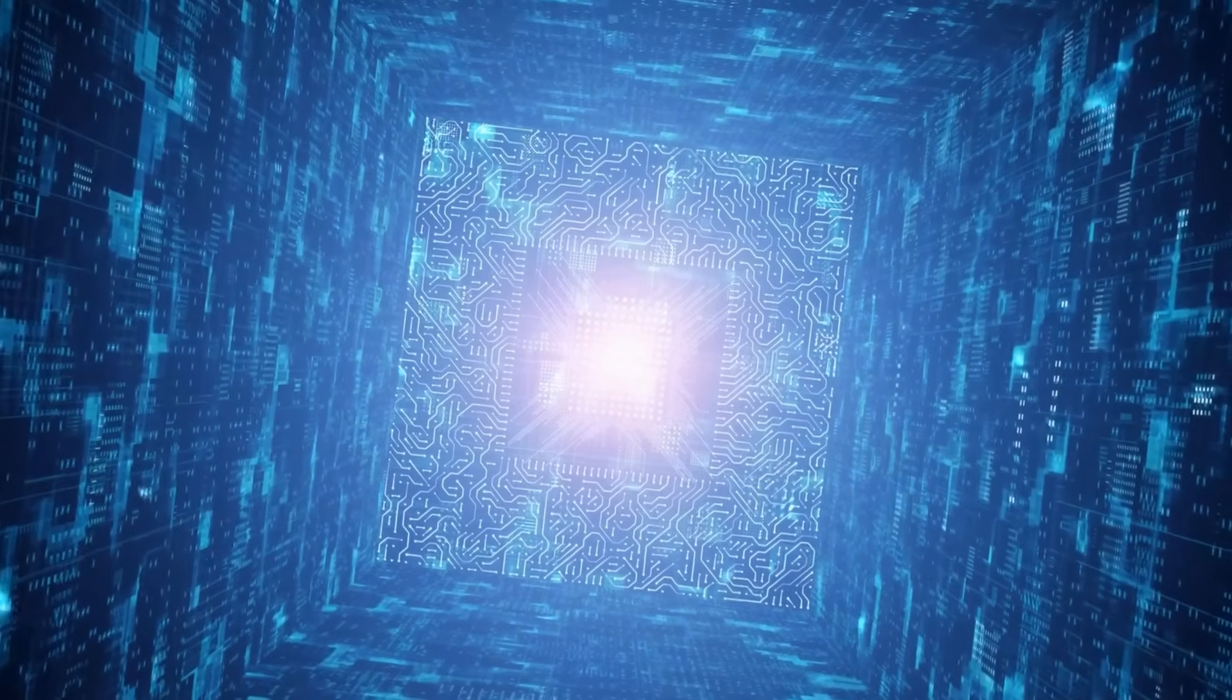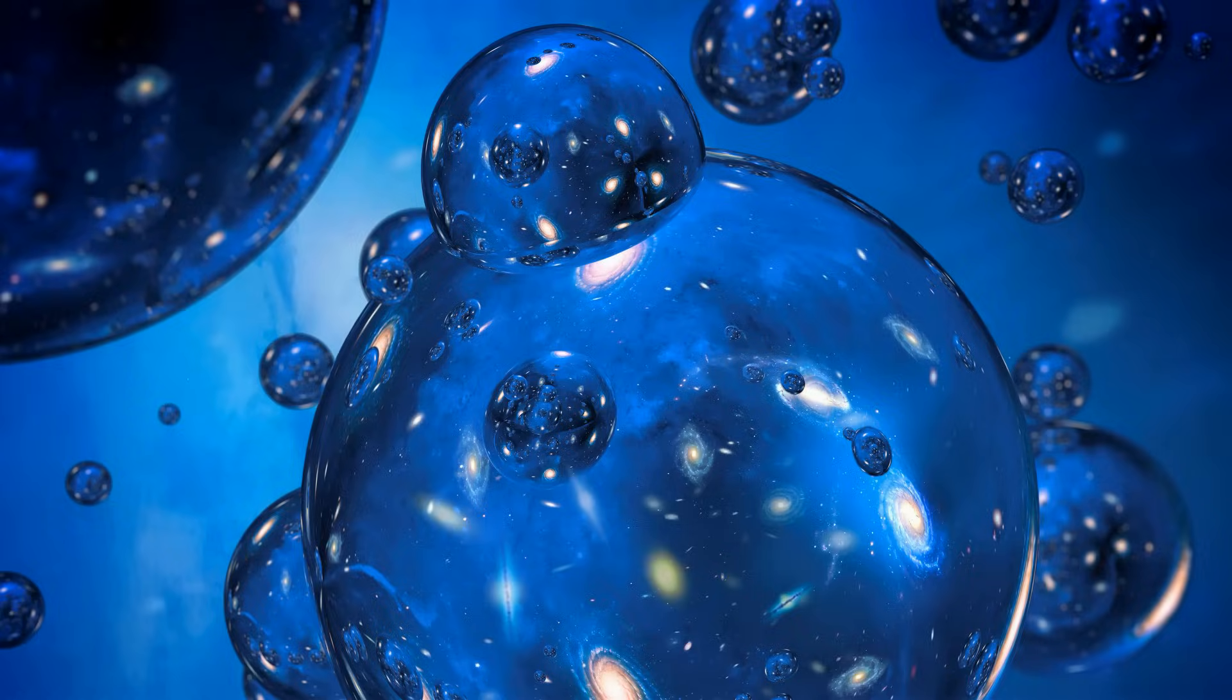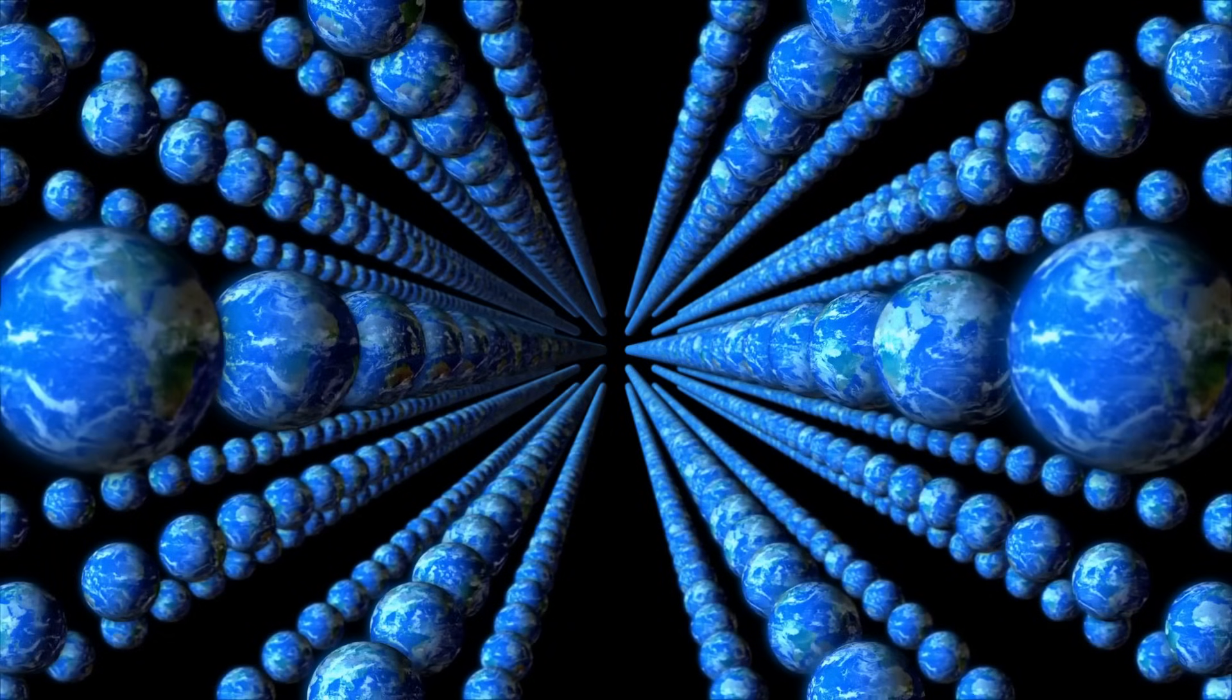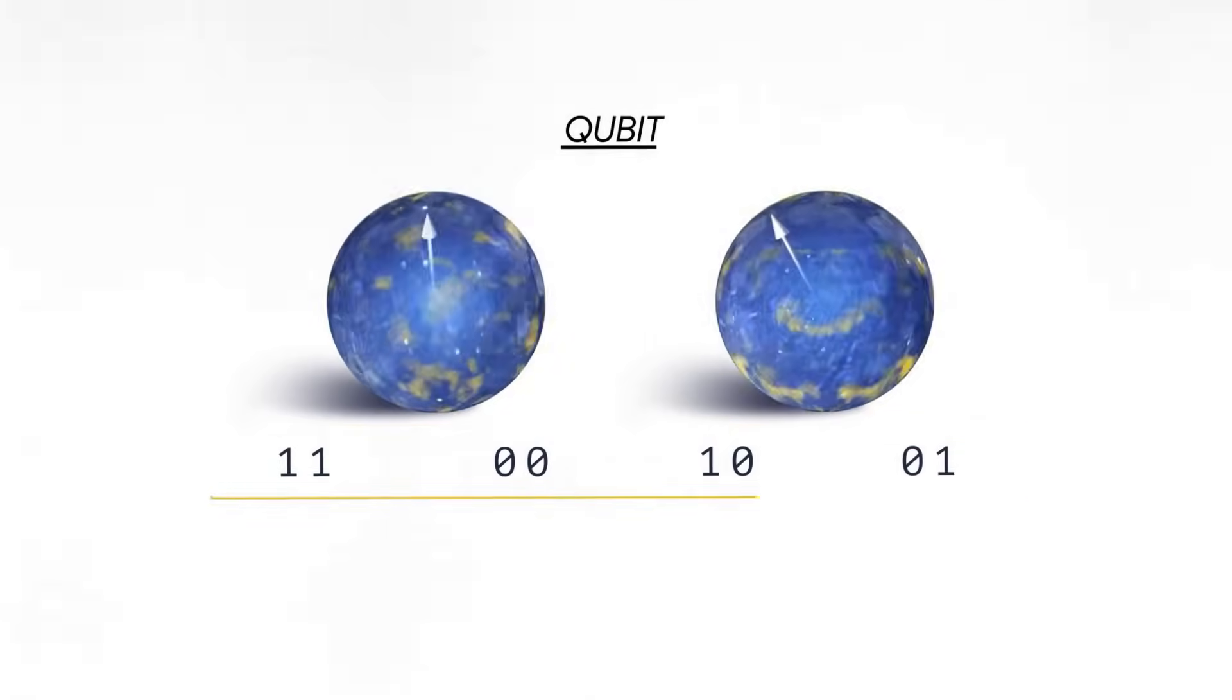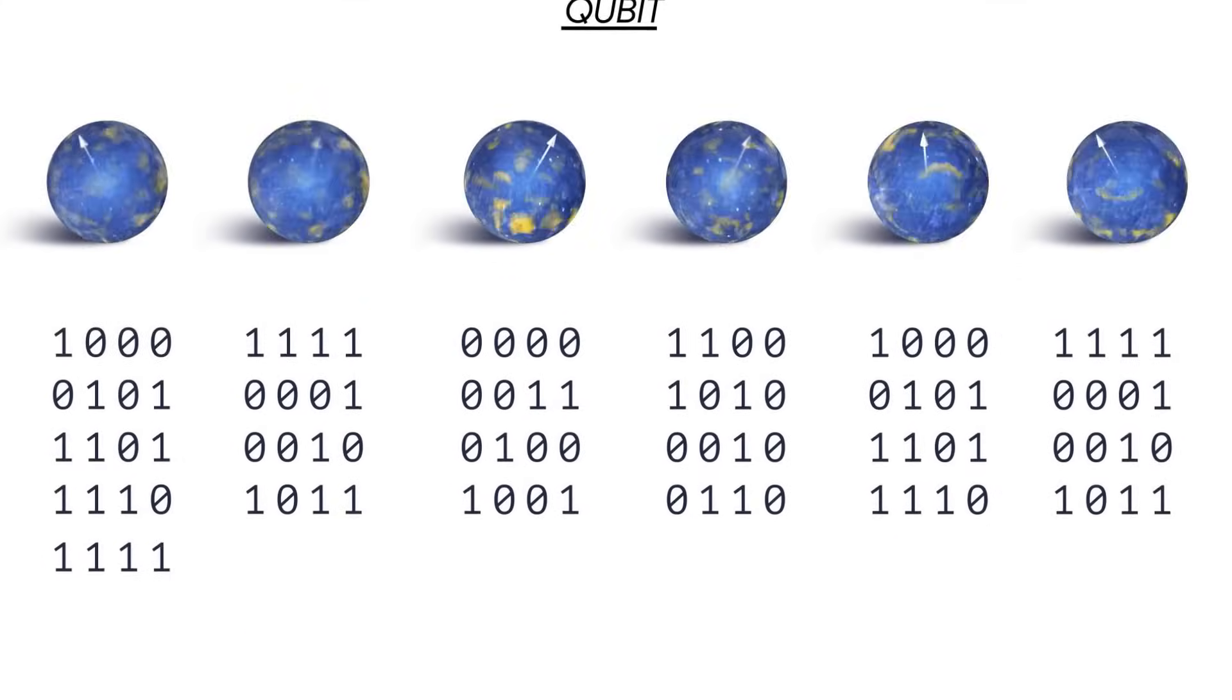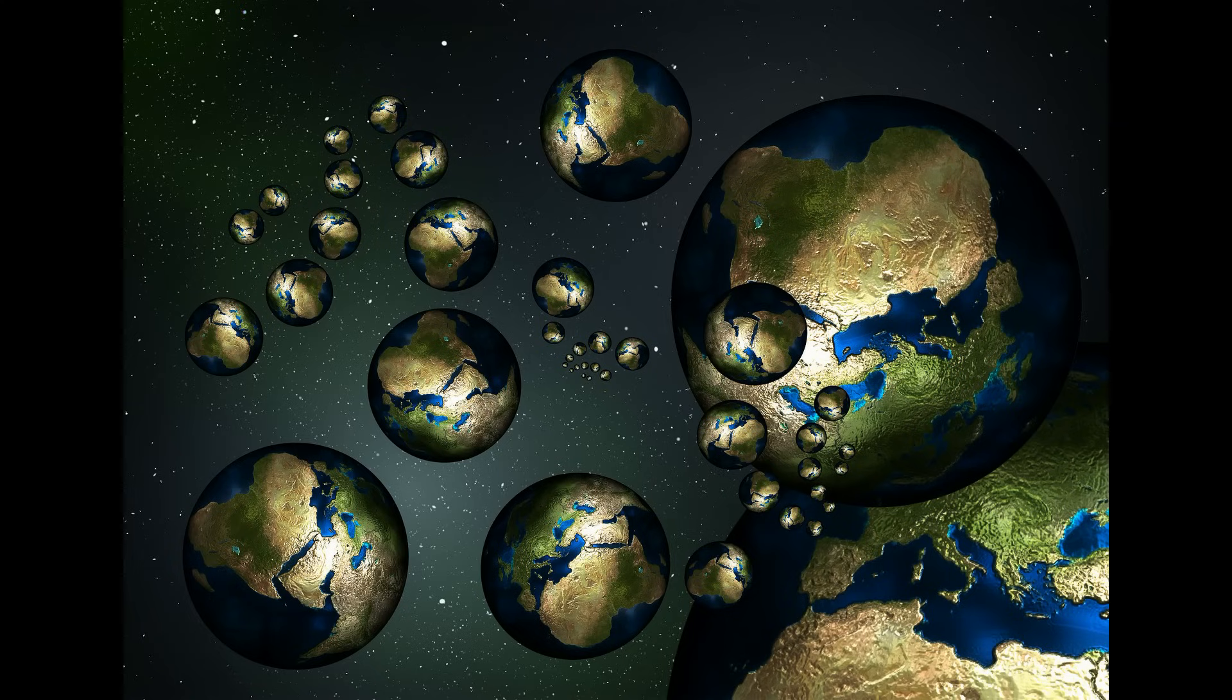Now, let us address an intriguing question. What is the connection between Google's Willow chip and the concept of parallel universes? Some explanations suggest that the Willow chip's incredible speed in solving problems is because it performs a vast number of calculations simultaneously across multiple parallel universes. This idea has sparked widespread discussions and debates. It is true that the Willow chip can perform many calculations in parallel. However, this is not unique to the Willow chip. It is a property of all quantum computers. This capability arises from the quantum phenomenon of superposition, where qubits can exist in multiple states simultaneously.